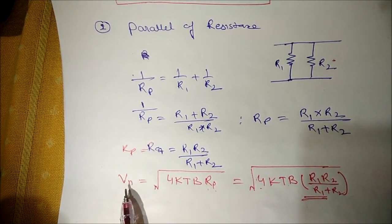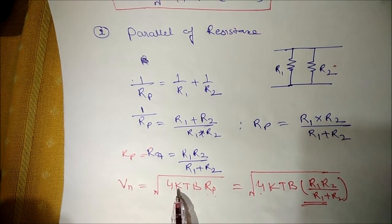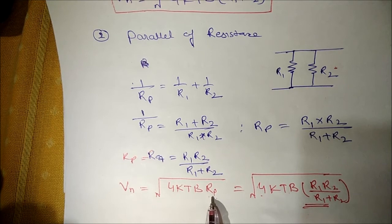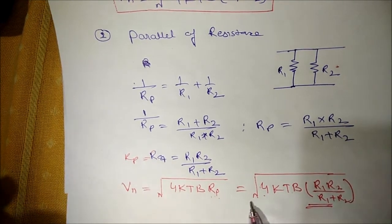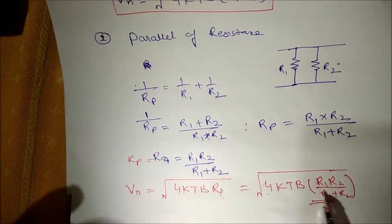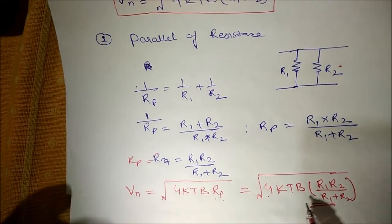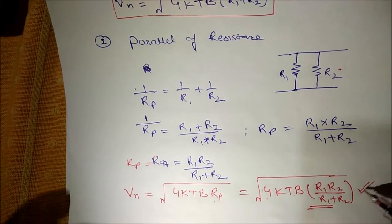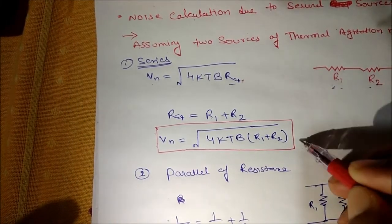Replacing in terms of noise voltage under root of 4KTBrp, in place of R equivalent we replace it by Rp and this Rp is just replaced with R1 R2 upon R1 plus R2. So the final noise voltage in parallel combination is given by this formula and in series combination it is given by this formula.